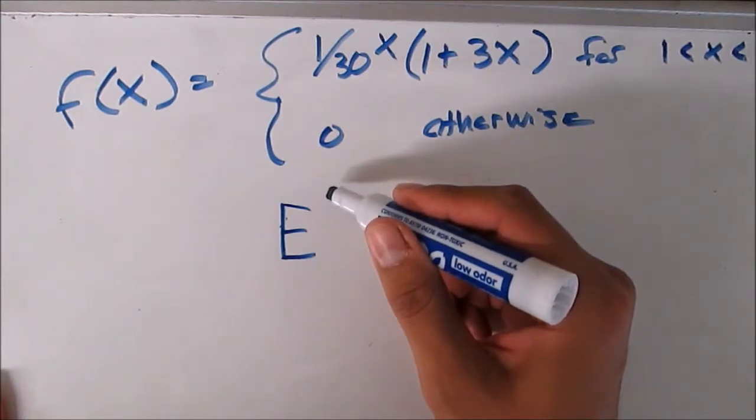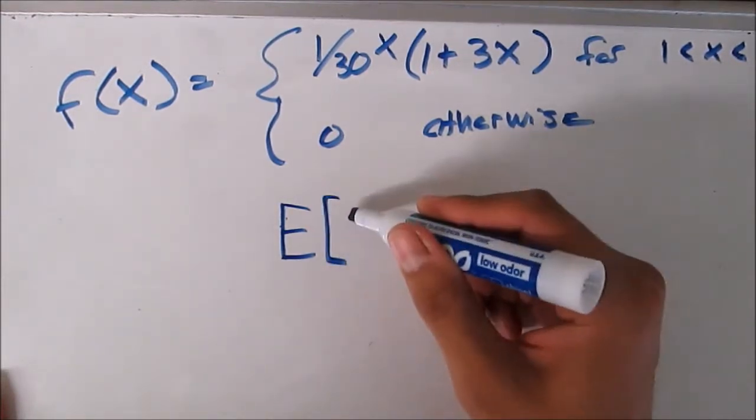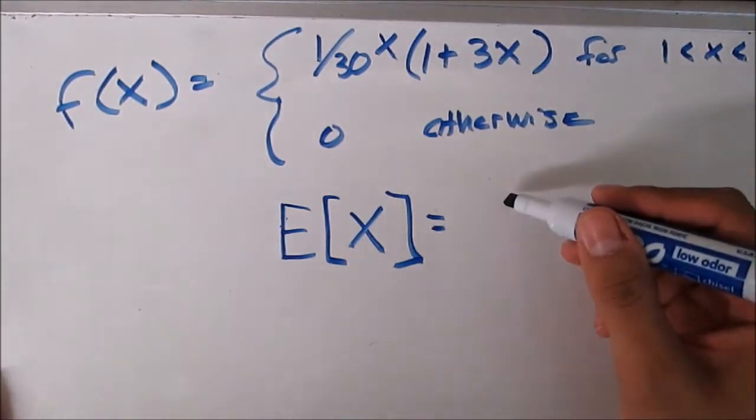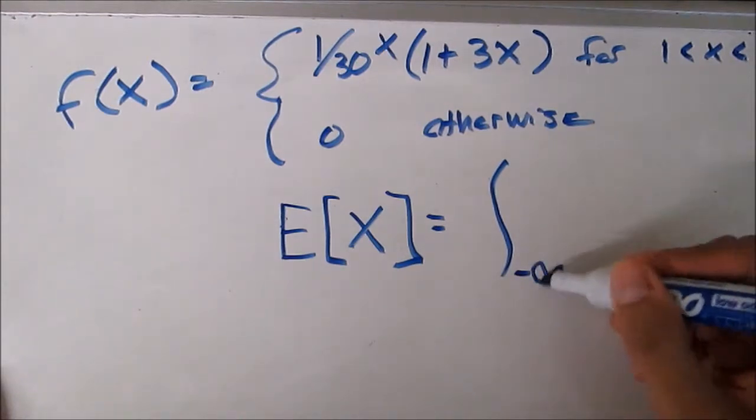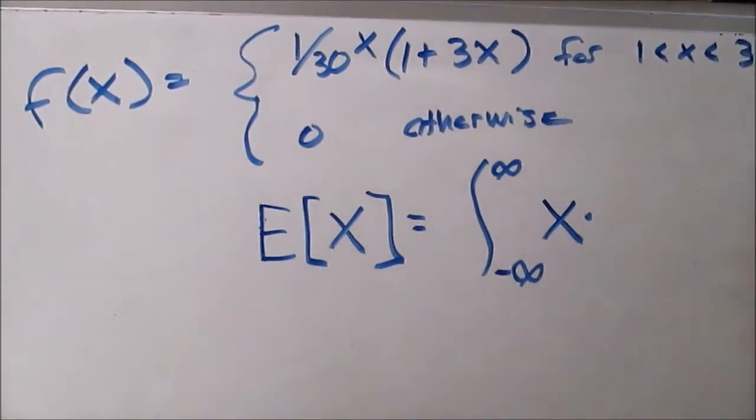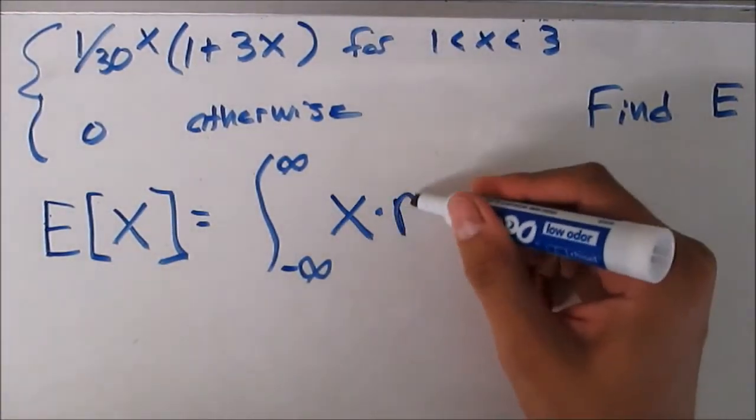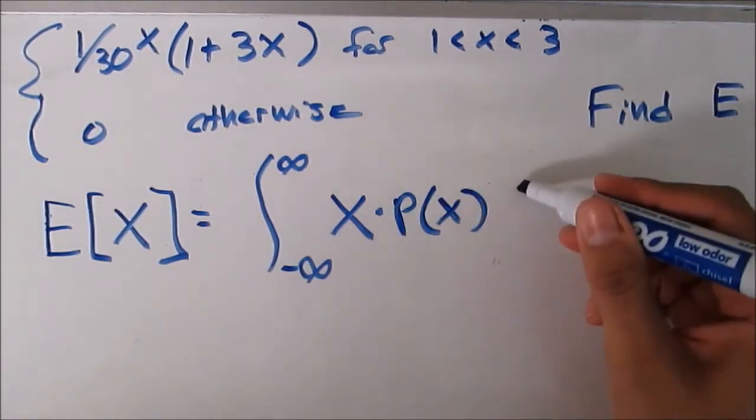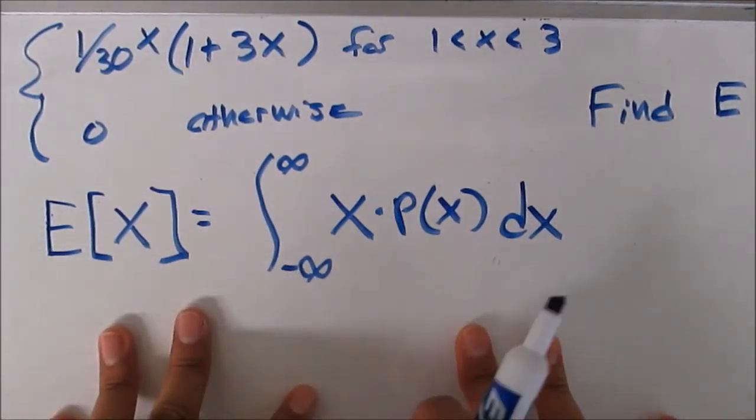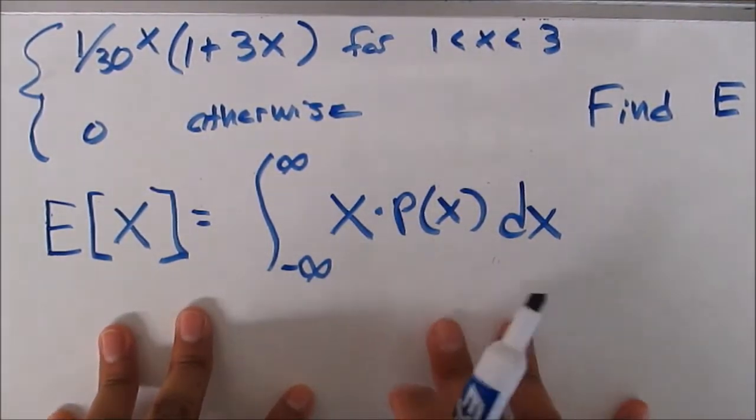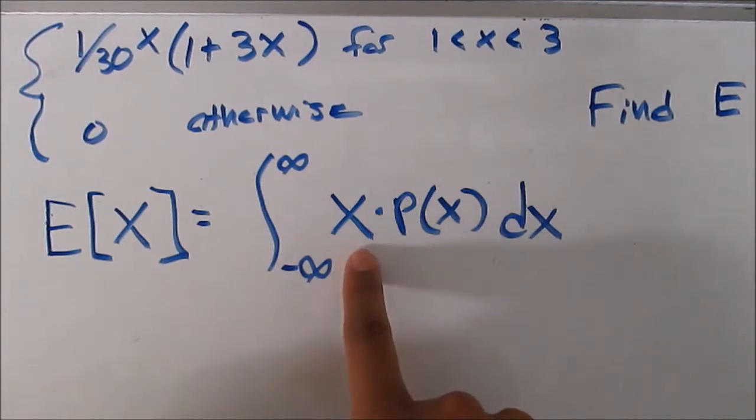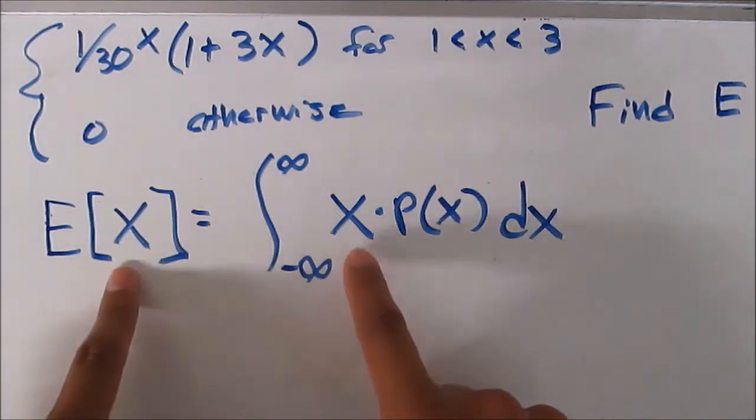So the expected value for a continuous distribution equation is the following. E of x equals the integral from negative infinity to positive infinity of x times the probability of x with respect to x. Now that should look familiar comparing it to the discrete expected value. Now notice though this x and this x are the same and that's where we get this x.